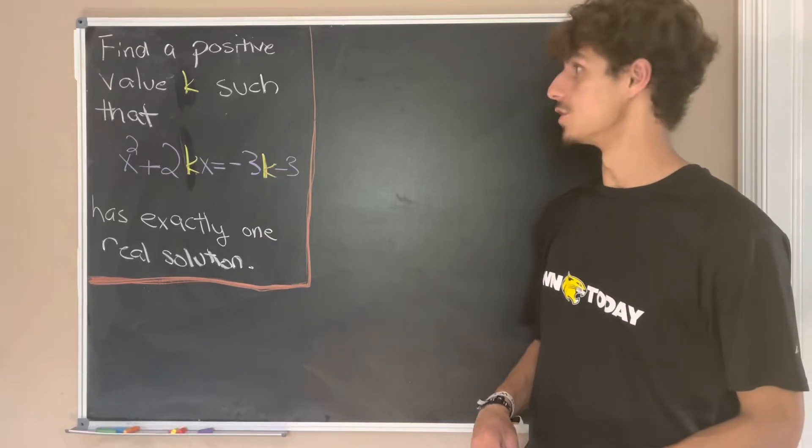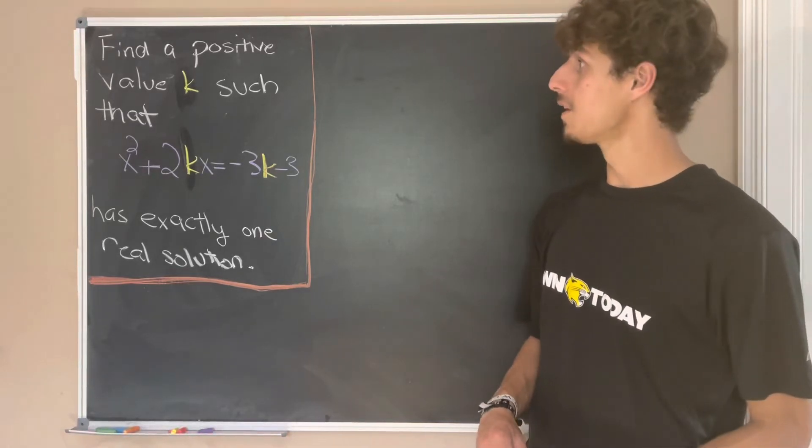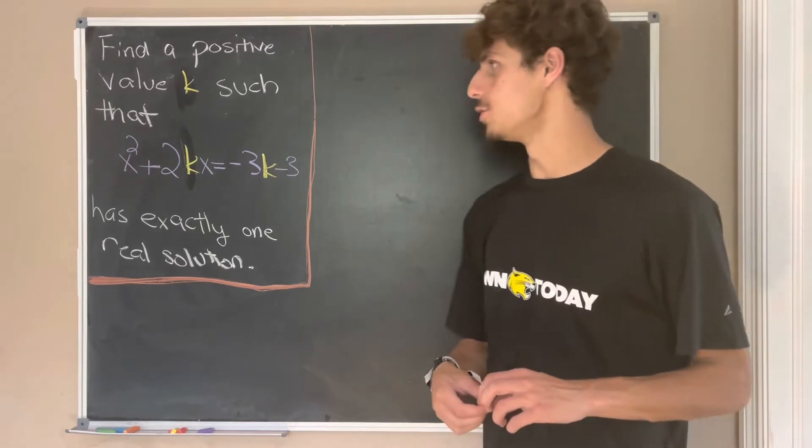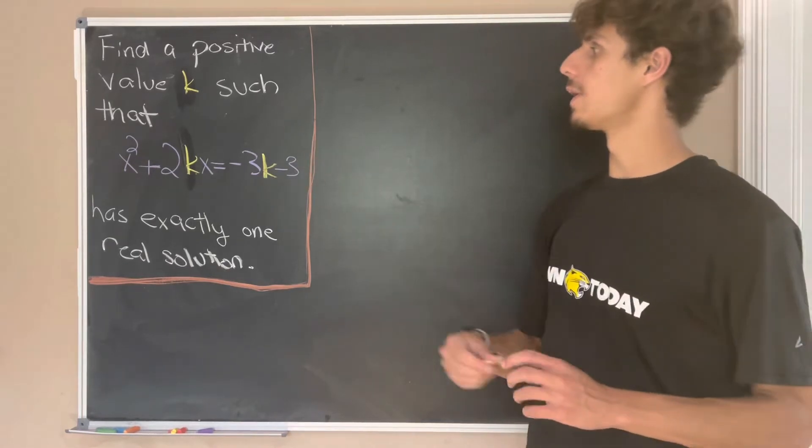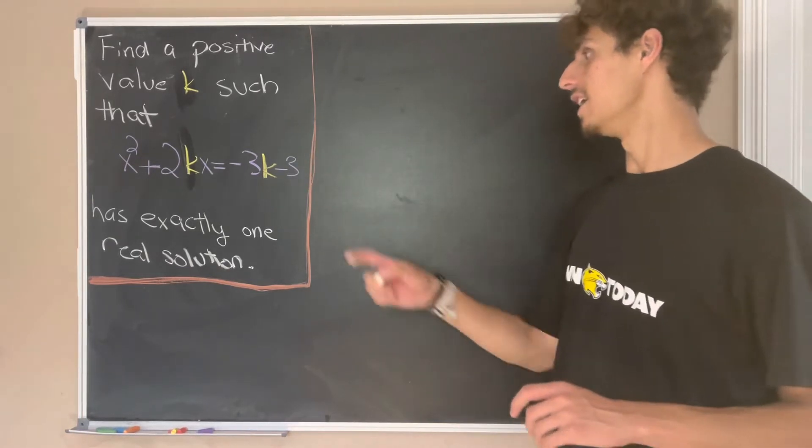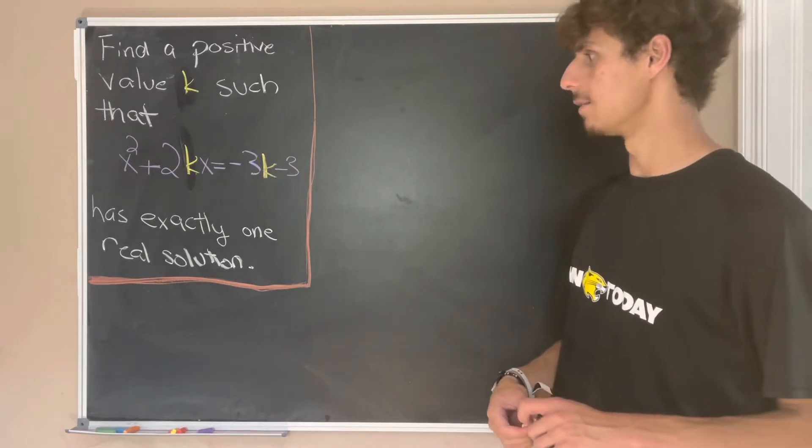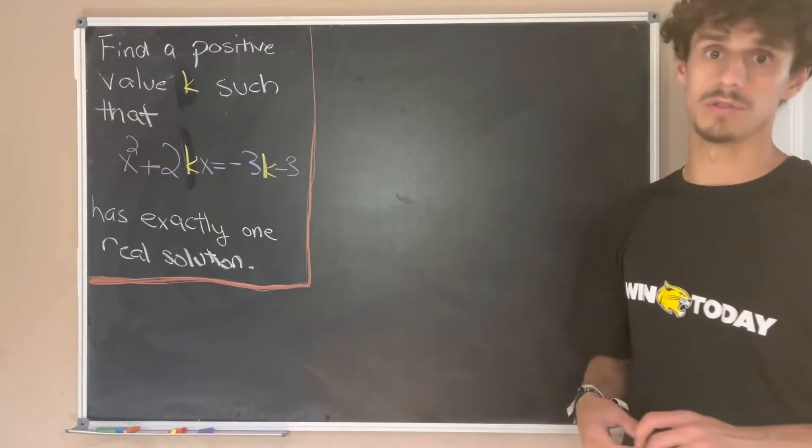Here I have a problem from the University of Houston 2009 math contest. It asks us to find a positive value k such that x squared plus 2kx equals negative 3k minus 3 has exactly one real solution.